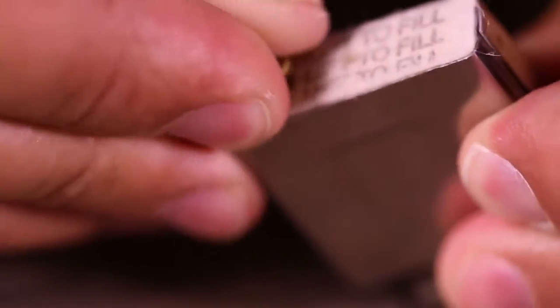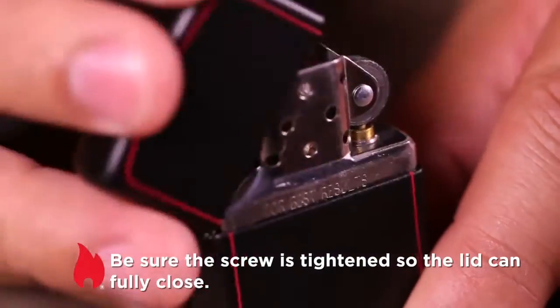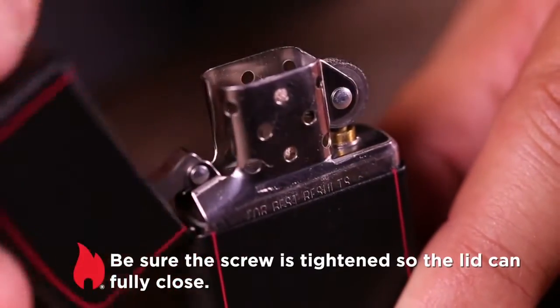Replace the flint spring and turn clockwise until tight. Important tip: be sure the screw is tightened so the lid can fully close. A tight seal will help delay the lighter fluid's evaporation. Re-tighten if the lid does not close.